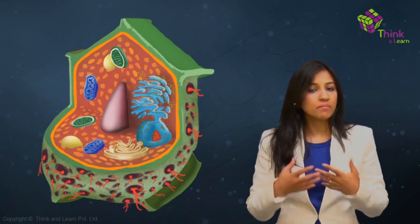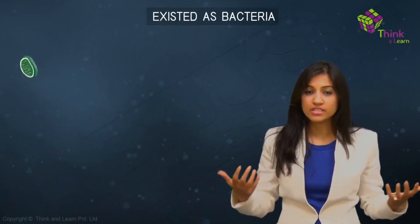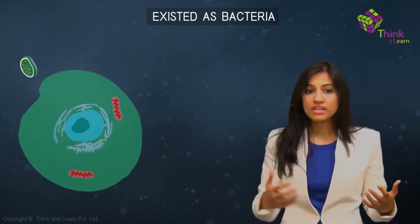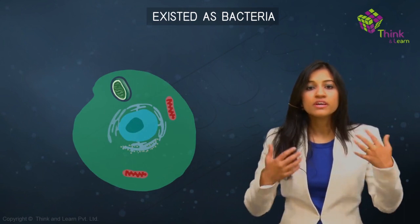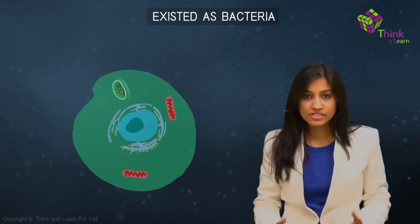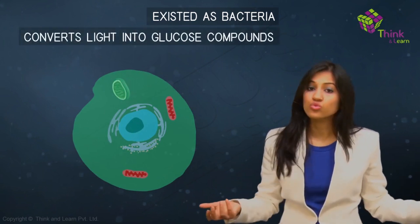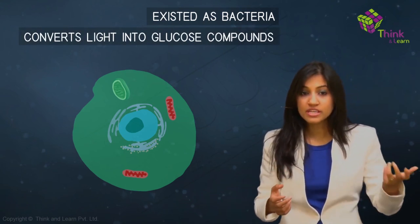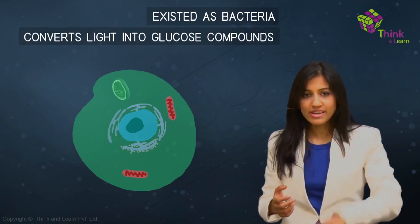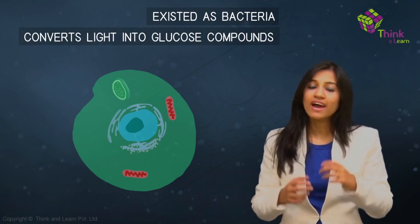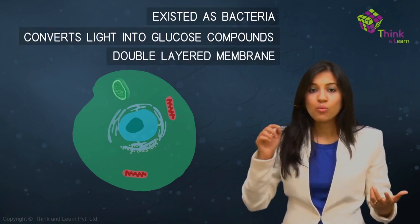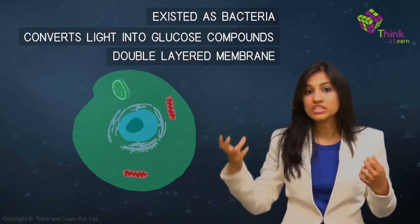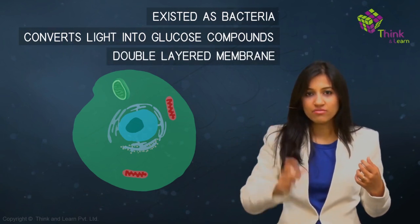The story is the same. The plastid existed as a type of bacteria a very long time ago. One day, a plant cell came along, absorbed one of these, and realized it would be an awesome bacteria to keep inside it — it converts light into glucose compounds. No one knows how this happened, but scientists know for sure that it happened because both mitochondria and plastids have double-layered membranes: one from its own and one from the cell which engulfed it.